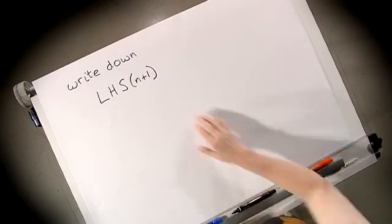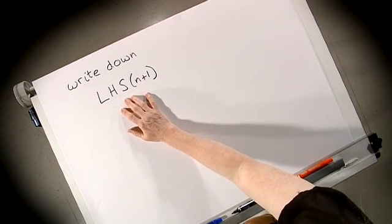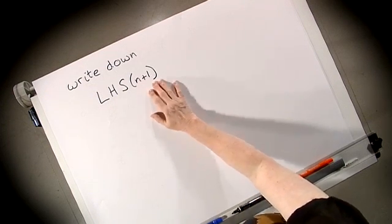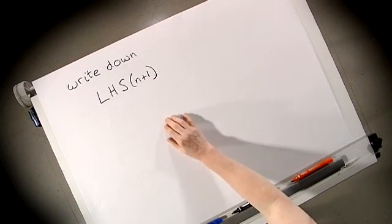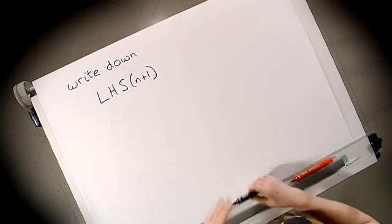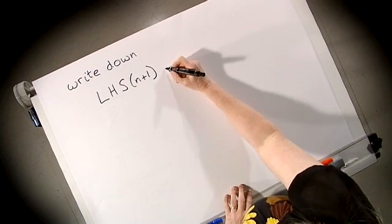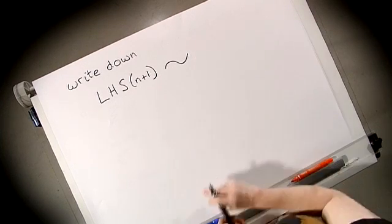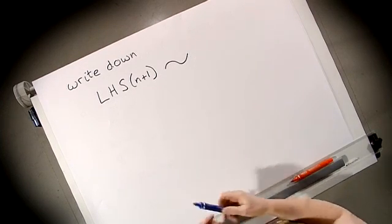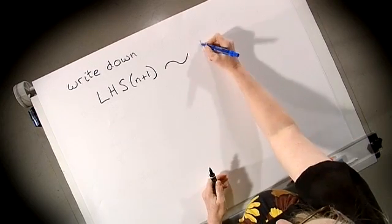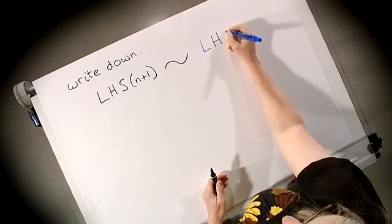We write down the left hand side of our expression but replacing the N's with N+1. So we have the left hand side of N+1. So our first task is to find a relationship that relates the left hand side with N+1 in it to the left hand side with N.